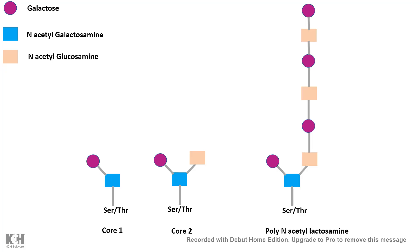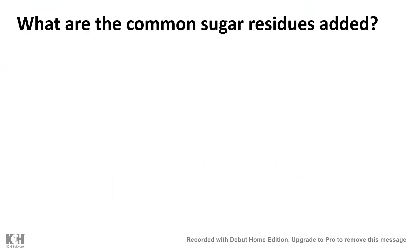But there are some classical structures which are known as core 1, core 2, or something very complicated like poly-N-acetyl-lactosamine. So basically it contains N-acetyl-galactosamine, N-acetyl-glucosamine, and sometimes galactose, sometimes fucose, or the sugars could be different. Now let's talk about what are the common sugar residues present in these O-linked glycosylation tags.